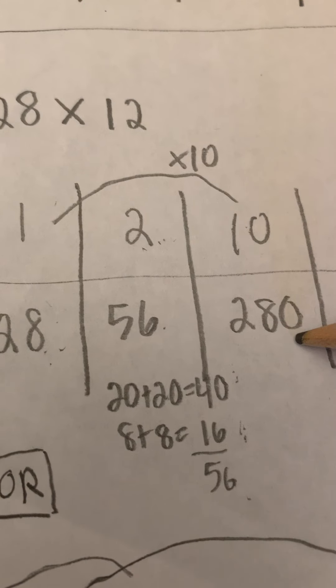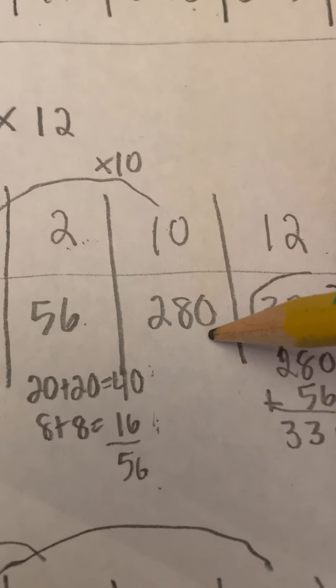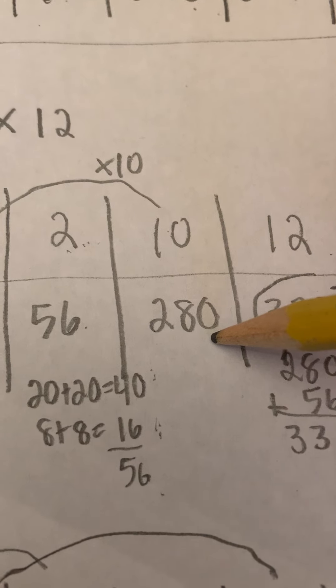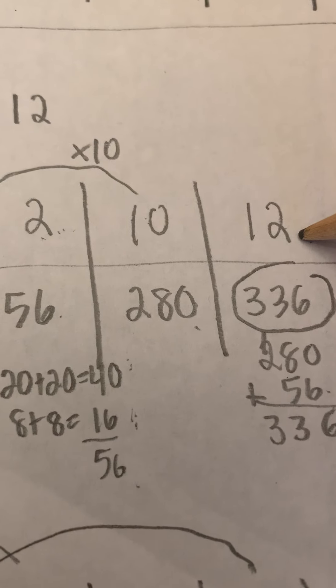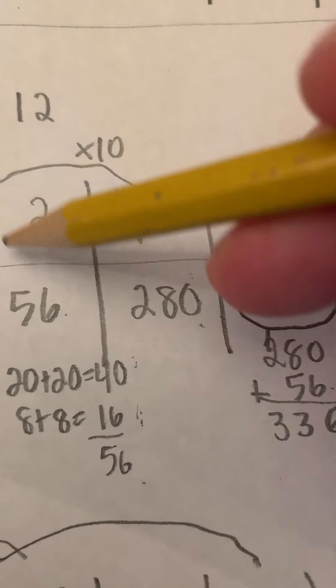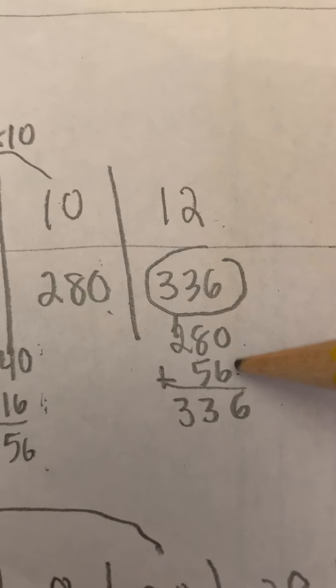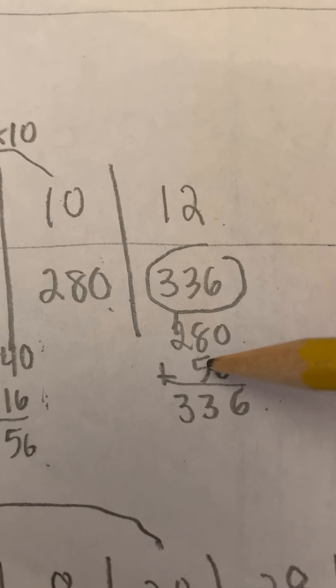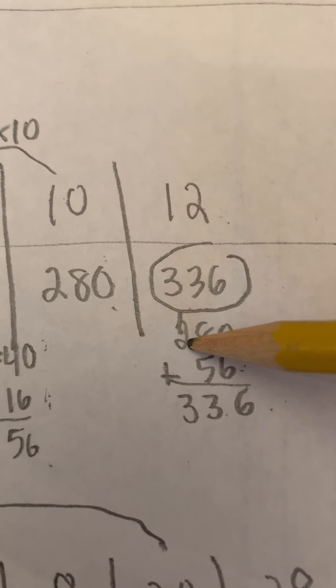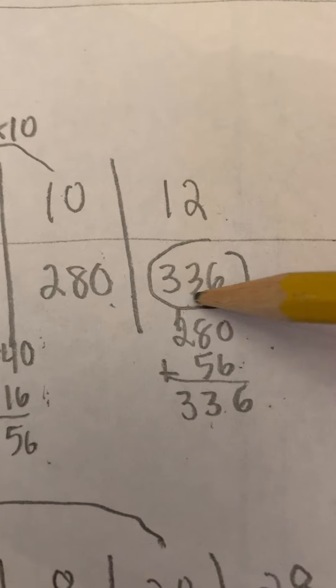move the 28 over, put a 0 in the 1's place to hold it for 280. And then when I have 12 sets, I add my 10 sets plus my 2 sets, so 280 plus 56. 0 and 6 is 6, 8 and 3 is 13, carry 100. 200 plus 100 is 300, 336.